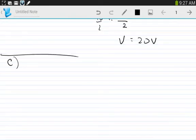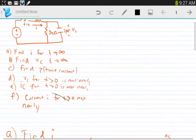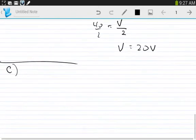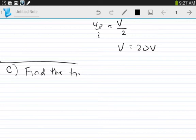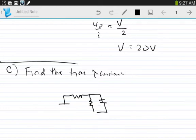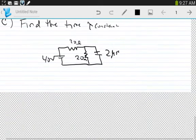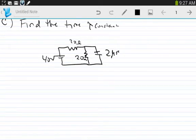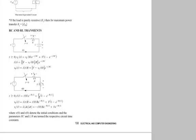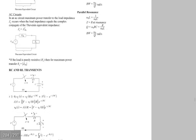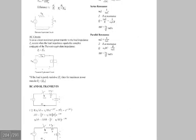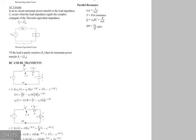Part C: Find the time constant. Let's look at the reference manual. Time constant isn't directly in here, but if you look at RC and RL transients, the time constant for an RC circuit is given.